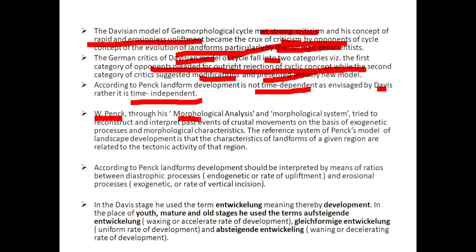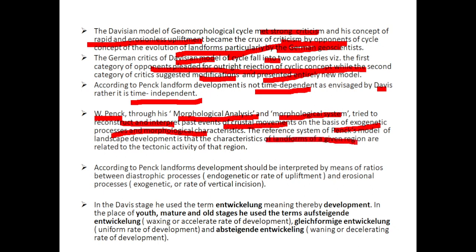W. Penck, through his Morphological Analysis and Morphological System, tried to reconstruct and interpret past events of crustal movement on the basis of exogenetic processes and morphological characteristics. Penck's model of landscape development holds that the characteristics of landforms of a given region are related to the tectonic activity of that region. According to Penck, landform development should be interpreted by means of the ratio between diastrophic processes and erosional processes.